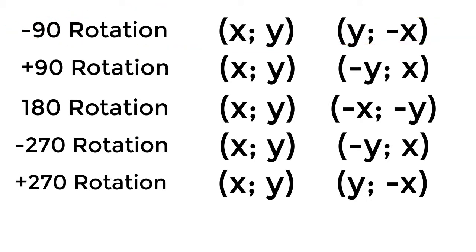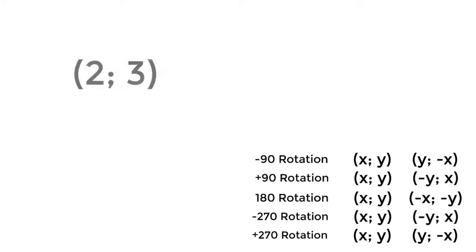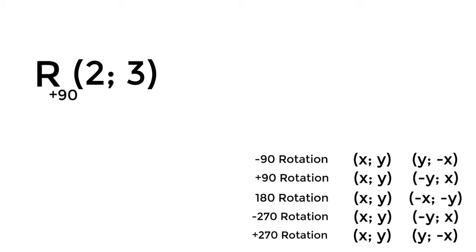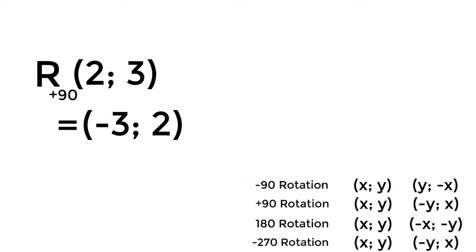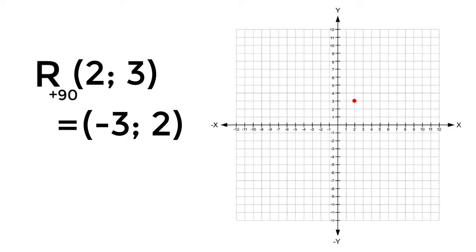With this table, we can rotate any figure in the coordinate plane even without graphing. Note that the notation for rotation in math is R with the degree of rotation written below. For example, the counterclockwise 90-degree rotation of a point is written using that notation. We apply the rule from the table, and the answer will be (-3, 2). Let's check this in the graph — the point is at (-3, 2). Correct!